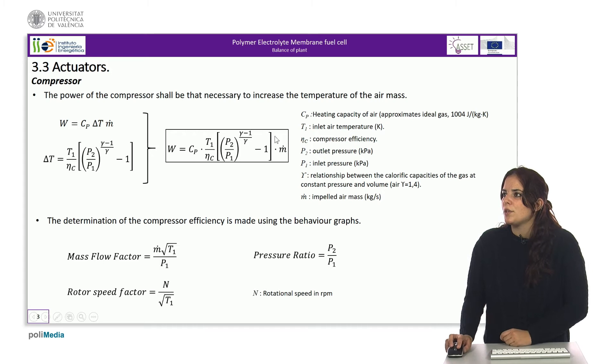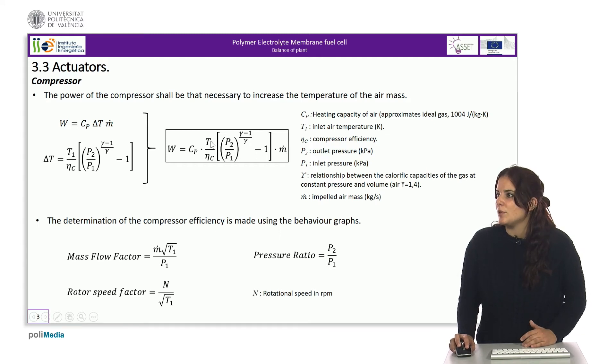Combining both expressions, an equation is obtained that allows the calculation of the compressor power for a certain mass flow, a ratio of inlet and outlet pressures, and the initial air temperature.